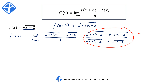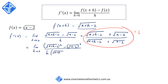However, we can now use the difference of two squares identity and reduce this to the limit as h approaches 0 of the square root of x plus h minus 2, all squared, minus the square root of x minus 2, all squared, all over h times the square root of x plus h minus 2 plus the square root of x minus 2. The squares and square roots cancel, leaving the limit as h approaches 0 of x plus h minus 2 minus x plus 2.